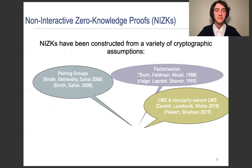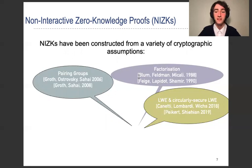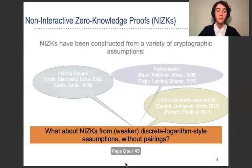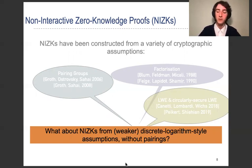NIZKs are a very important cryptographic primitive and have been constructed from a variety of cryptographic assumptions — from factorization, pairing groups, and more recently from breakthrough results which base NIZKs on LWE and circularly secure LWE. But an open problem is whether we can build NIZKs from groups where discrete log is hard — so can we build NIZKs in groups without pairings? We can think here of DDH groups, CDH groups, or maybe just groups where the discrete logarithm is hard.